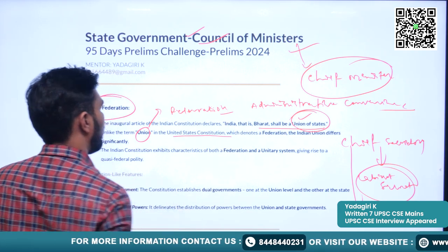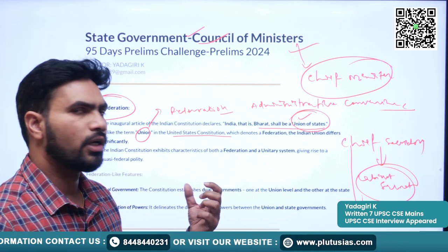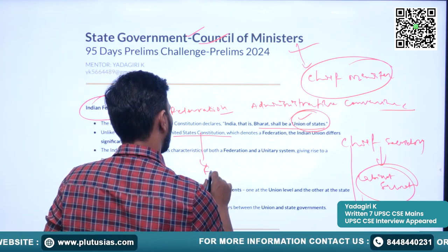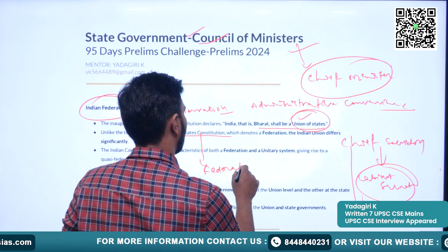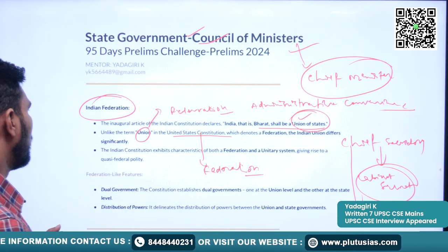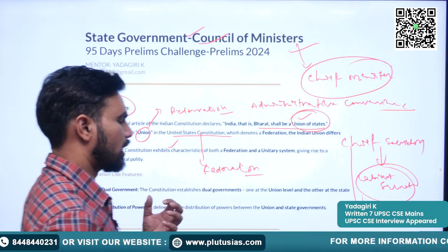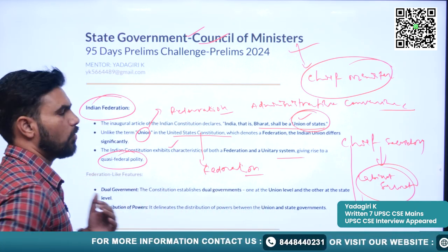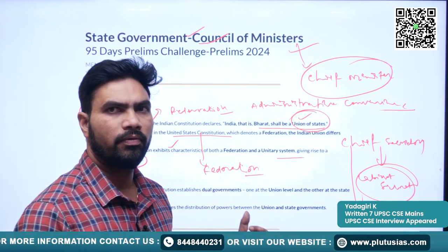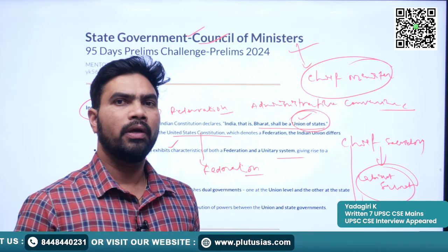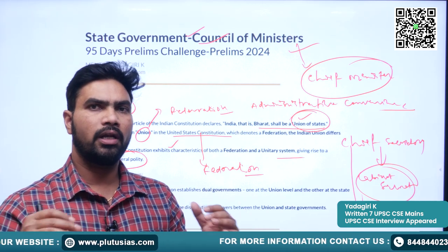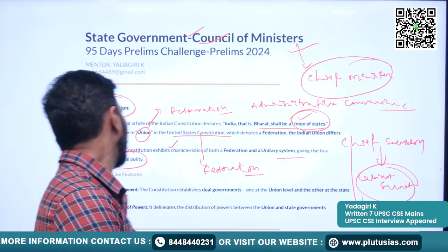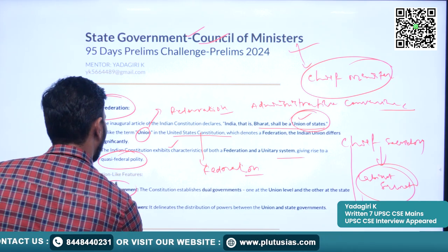The federation of India differs greatly from the federation in the United States of America, where the word 'federation' is used in the constitution itself. The Indian constitution exhibits characteristics of both federation and the unitary system, giving rise to a quasi-federal quality. We have a quasi-federal system — half federation — so the division of powers is not watertight in the case of India.